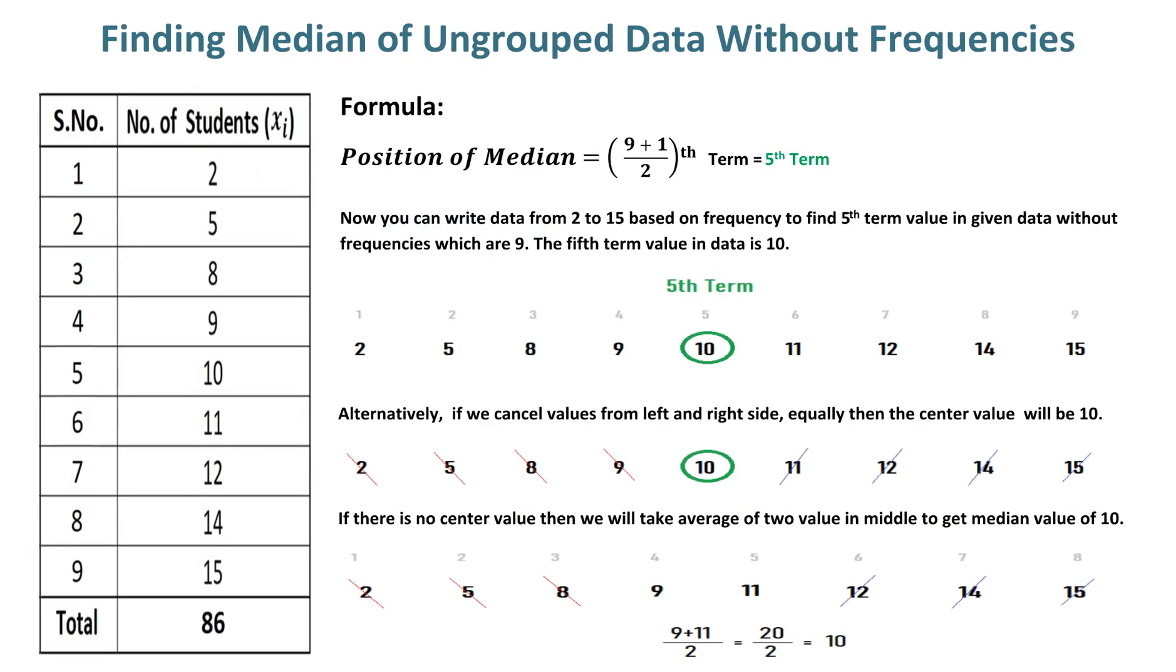Finding median of ungrouped data without frequencies. After arranging data, you can add the total number of observations (9) with 1 and divide by 2 to get the 5th term value. The median, circled in green, is 10.